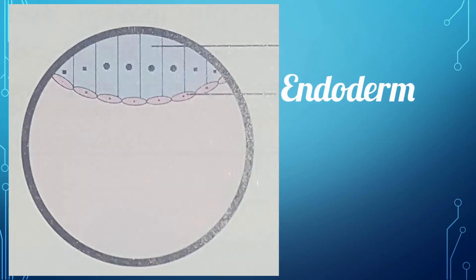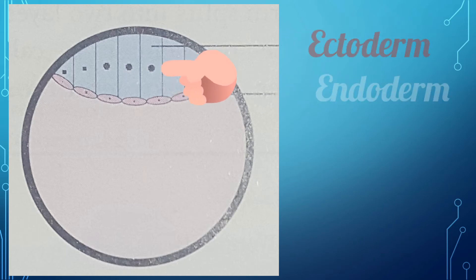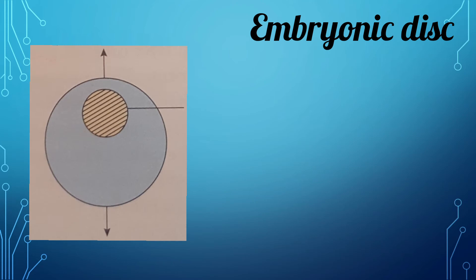At one end of this embryonic disc, a rounded area becomes thicker than the rest of the disc and is termed the prochordal plate. This prochordal plate determines the head and tail of the embryo. It also determines the central axis of the embryo.